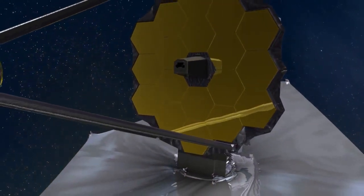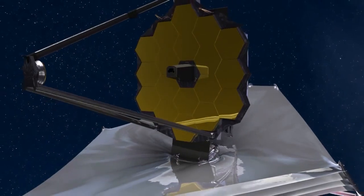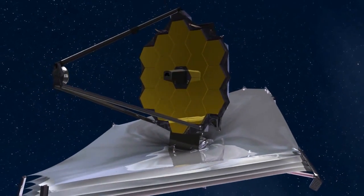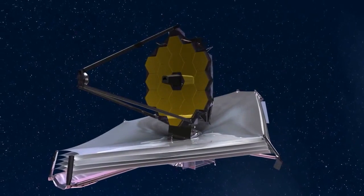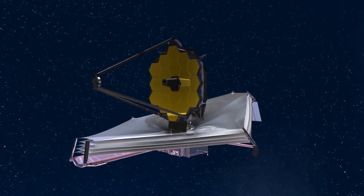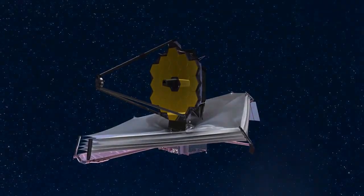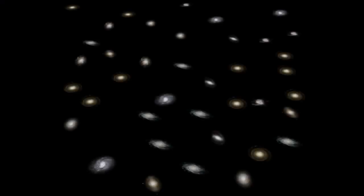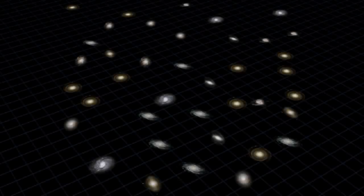The Webb telescope sees infrared light, which is invisible to the human eye, though we still perceive it as heat. Putting an infrared telescope like Webb in space is going to open entirely new regions of the universe to us. To understand this, you need a little astronomical background.